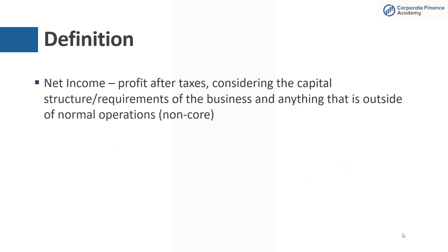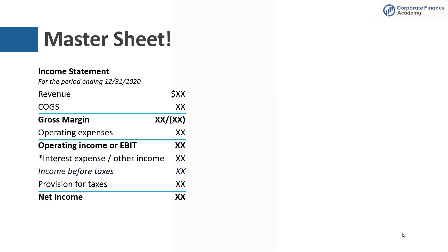Net income is your profit after taxes and after interest, so it considers all your capital structure requirements. It's also after other income, which is sometimes a little non-core. We want to give you a master sheet to help you think through all these different terms and how you can decipher them.